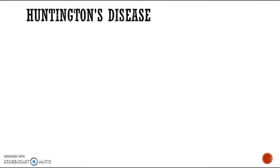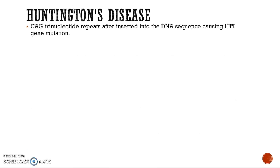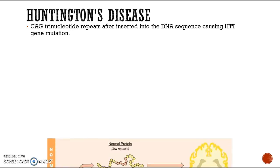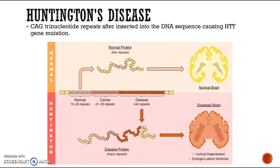An example of a disease caused by insertion mutation is Huntington's disease. The CAG trinucleotide repeats are inserted into the DNA sequence, causing HTT gene mutation.